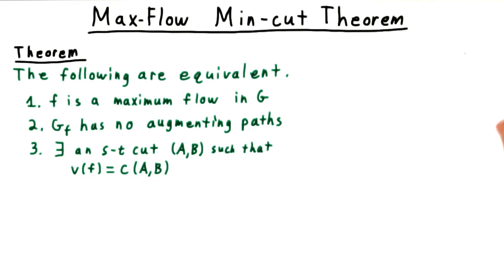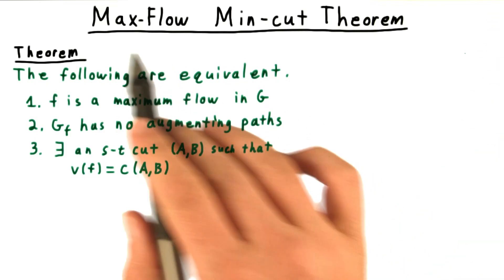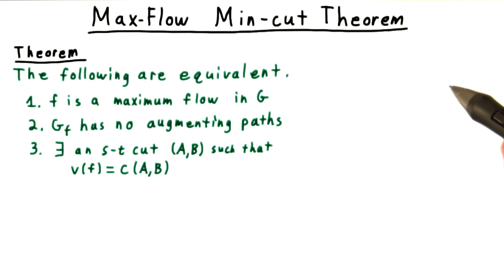We are now ready for the climactic big theorem of this lesson, the max flow min cut theorem. It states that the following are equivalent.